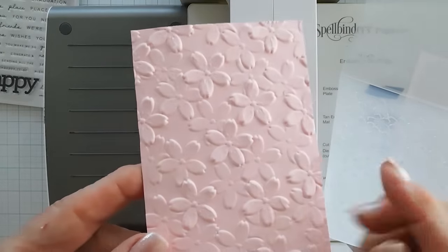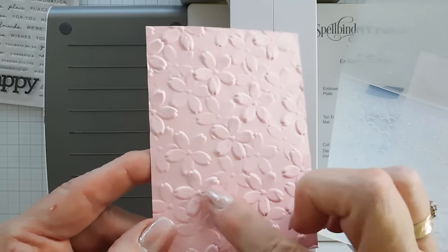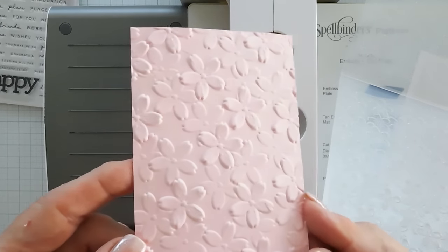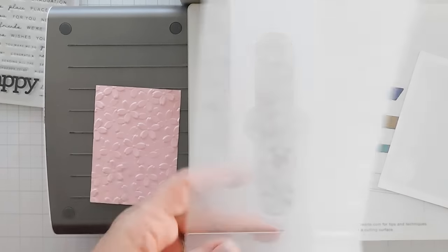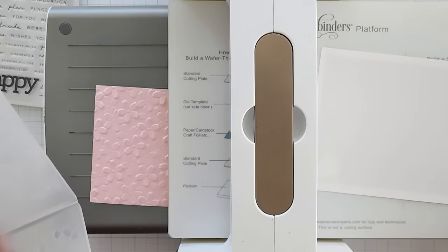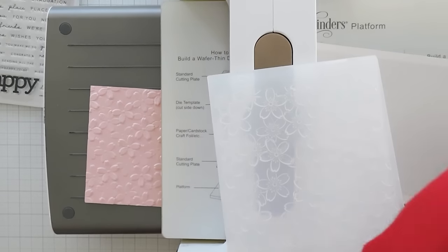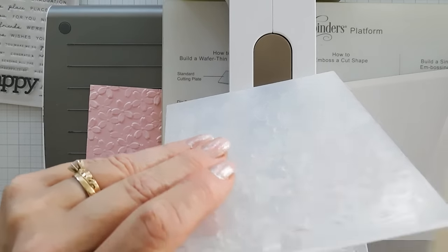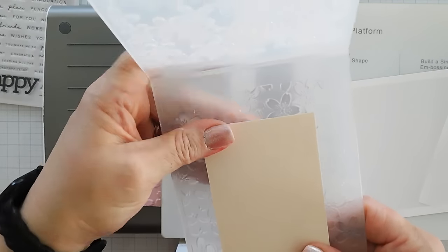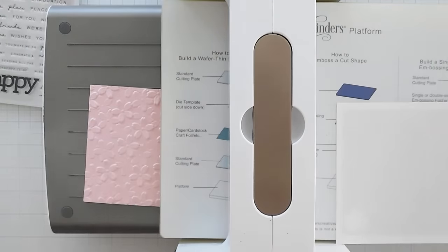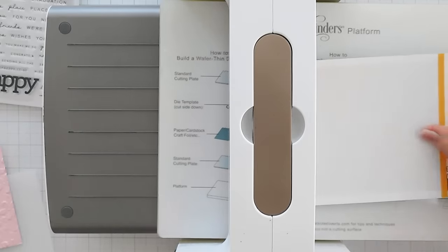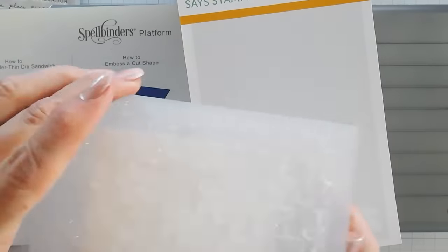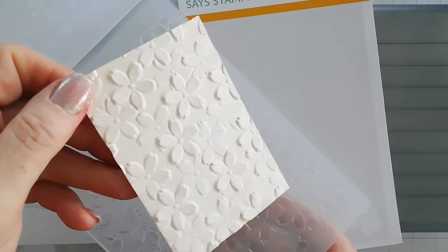But isn't this gorgeous? So pretty. You see how there's prominent blossoms? And then there's some behind it. I don't know how they do that, but that's just gorgeous. I'm going to do the same thing with my Barely Peach cardstock and my vellum. We'll just run this through. Easy peasy. And embosses beautifully every time. Look at that.